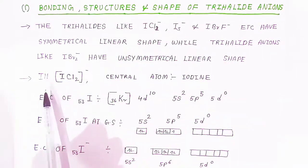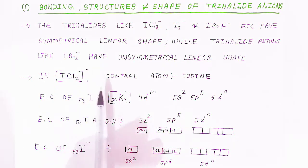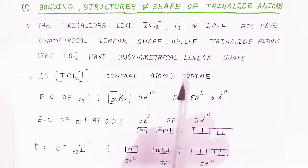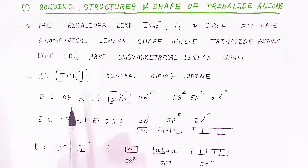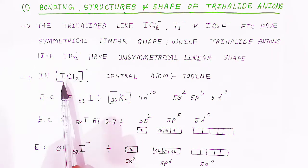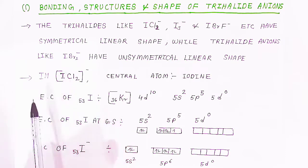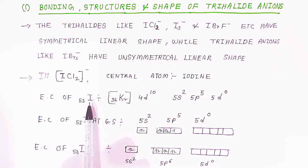When talking about the trihalide ion ICl₂⁻, the central atom will be iodine, surrounded by chloride ions. To explain these trihalide ions, you should first know the electronic configuration of iodine with atomic number 53.